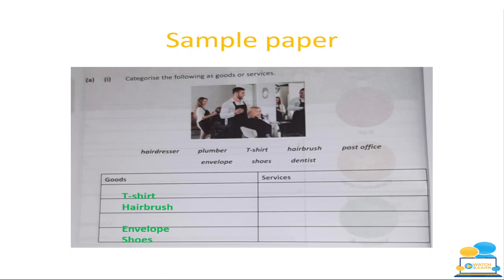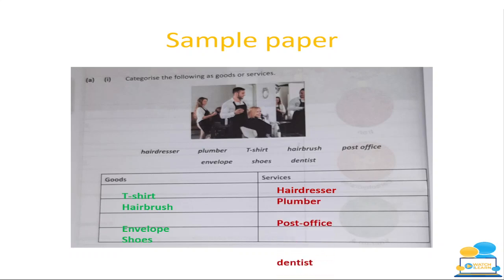Everything remaining is a service — your hairdresser, plumber, post office, and dentist. This is the type of question that comes up very commonly. If you do Junior Cycle Business as well, this will come up there too.